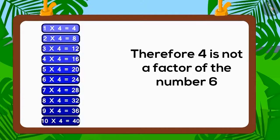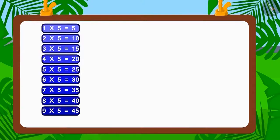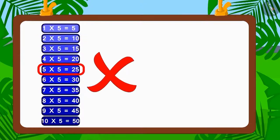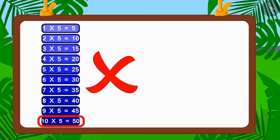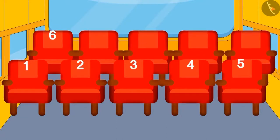Similarly, if we look at the table of five, then we will find that five is also not a factor of number six. So, a bus in which five people sit in each row will not be of any use to the villagers.